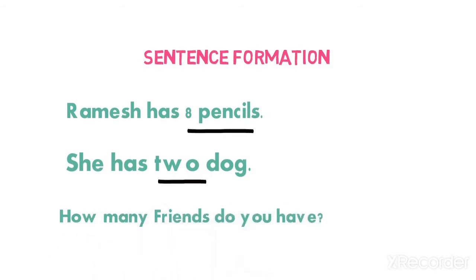Now the third one is, how many friends do you have? You might have three friends, four friends, five friends, ten friends. So you can count the number of friends. So they come in the category of countable nouns.